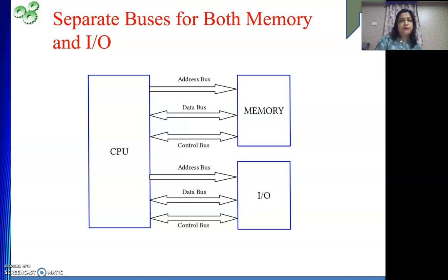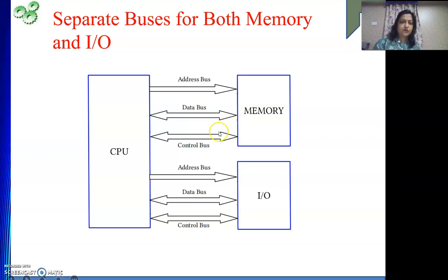First we will see separate buses for both memory and IO devices. On one side the processor is there, on the other side memory and IO device are there, with separate buses - address bus, data bus and control bus. The address is generated by the CPU towards memory; data can come from or go to memory; control signals go between memory and the processor. The same applies for IO devices. This organization has separate buses for each entity - one for memory, one for IO - but it is a costlier affair because we have separate buses. This is a costlier method and it was used in the very early days.